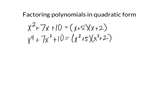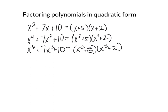It doesn't work with x cubed, but it works with x to the 6th plus 7x cubed plus 10 — that would factor as x cubed plus 5 and x cubed plus 2. And we can keep going: 8th and 4th, 10th and 5th. So x to the 8th plus 7x to the 4th plus 10 would be x to the 4th plus 5 times x to the 4th plus 2.